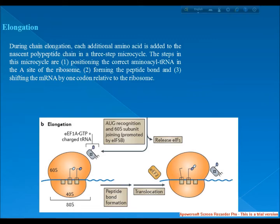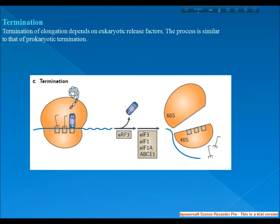The last step is termination of eukaryotic translation. Termination of elongation depends on eukaryotic release factors, and this process is similar to prokaryotic termination. The only difference is that the eukaryotic release factor is eRF only. Thank you.